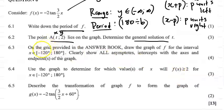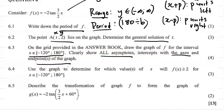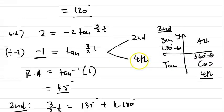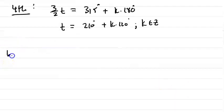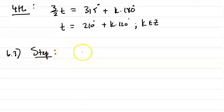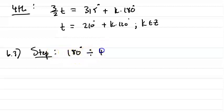Question 6.3: on the grid provided in the answer book, draw the graph of f for the interval from minus 120 to 180 degrees. Clearly show all asymptotes, intercepts with the axes, and endpoints of the graph. One thing to note: we're going to use our calculator. For the step with a tan graph, we do 180 degrees divided by 4b.